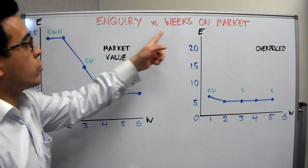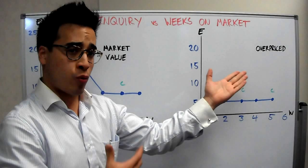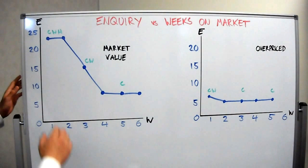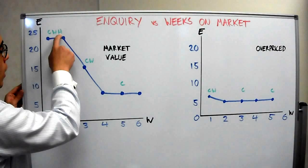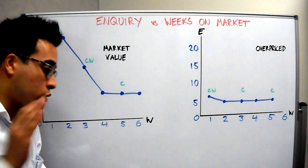This is the chart I call inquiry versus weeks on the market. I've got two charts here. One graph shows market value - what happens when a property is priced at market value. The other chart shows what happens when a property is overpriced. So it's inquiry levels versus weeks on the market. I'll start off with the market value one. You'll see that there's a peak at the start, and the reason why there's a peak is you get the cold, warm, and hot buyers - you get that whole pipeline looking at it in the first two weeks. The reason is those hot buyers have already seen everything else in the suburb.